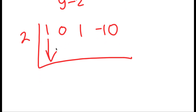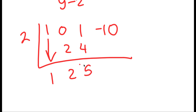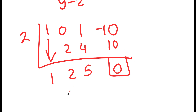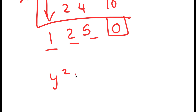I'm going to first start by moving down my 1. 2 times 1 is 2. 0 plus 2 is 2. 2 times 2 is 4. 1 plus 4 is 5. And 2 times 5 is 10. Negative 10 plus 10 is 0, so I have a remainder of 0. I'm going to use these as my coefficients, so I get y squared plus 2y plus 5.